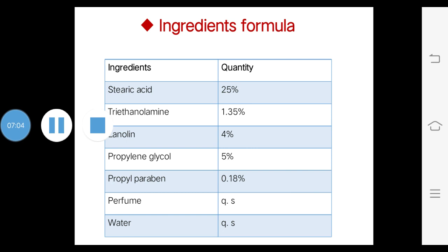Second is triethanolamine, used to moisturize the skin and help the cream produce a homogeneous appearance and spread easily. Quantity: 1.35%. Third is lanolin, used as an emollient to produce softer skin and to decrease itching and flaking of skin. Quantity: 4%.